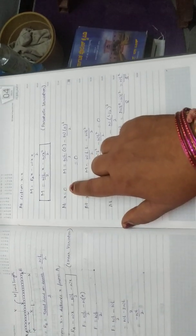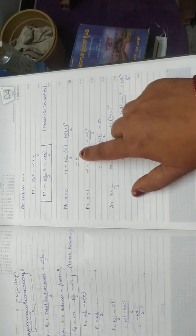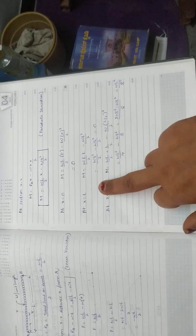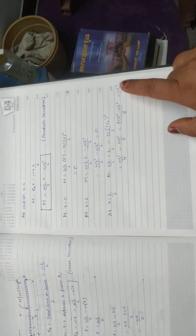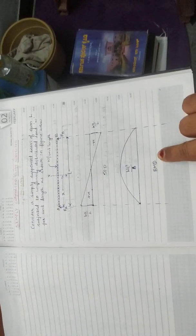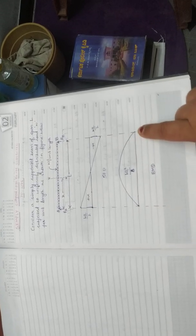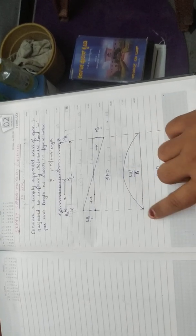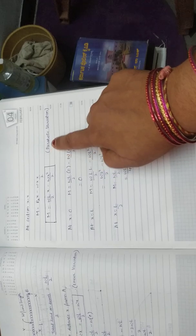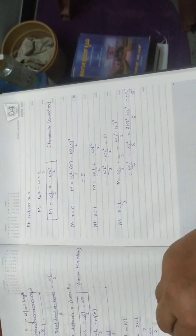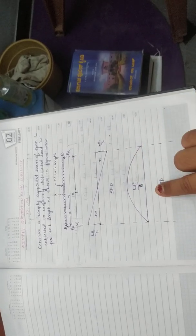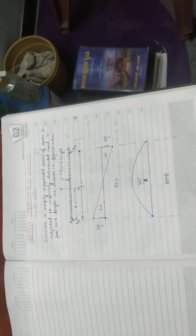As you can see, at X equal to 0 (at A), the Bending Moment is 0. At B also, the Bending Moment is 0. At midspan, that is at L by 2, the Bending Moment is WL squared by 8. I have drawn the Bending Moment diagram here — 0 at A, 0 at B, and WL squared by 8 at midspan. Since the equation contains X squared, the variation will be parabolic, so we draw it in curve form. Thank you.